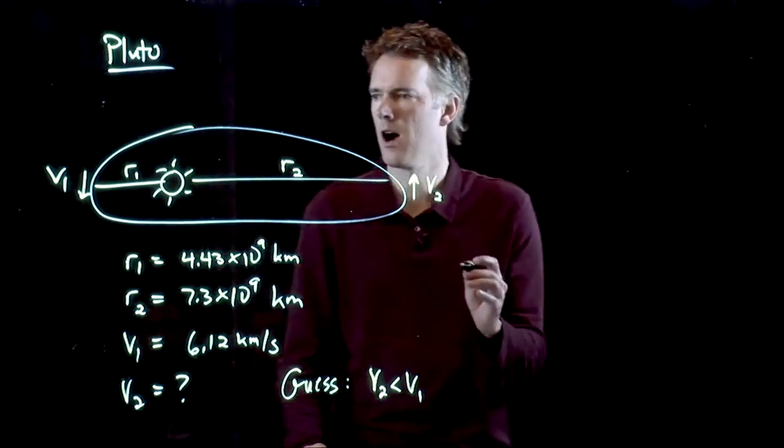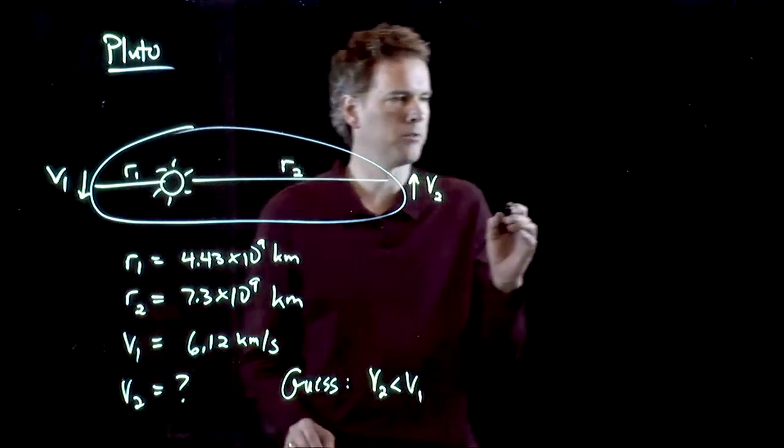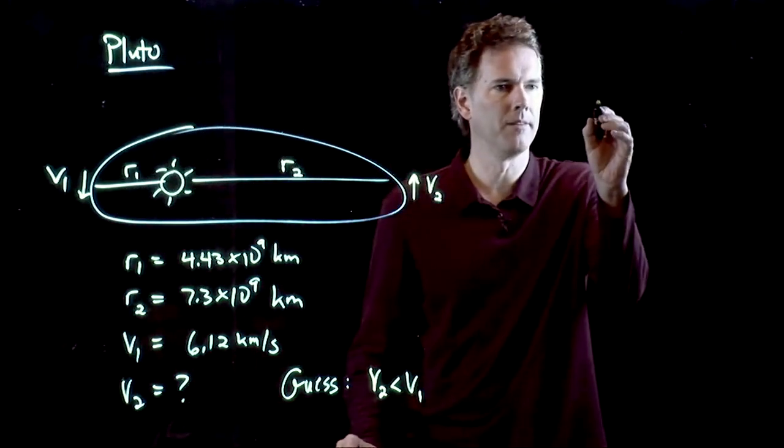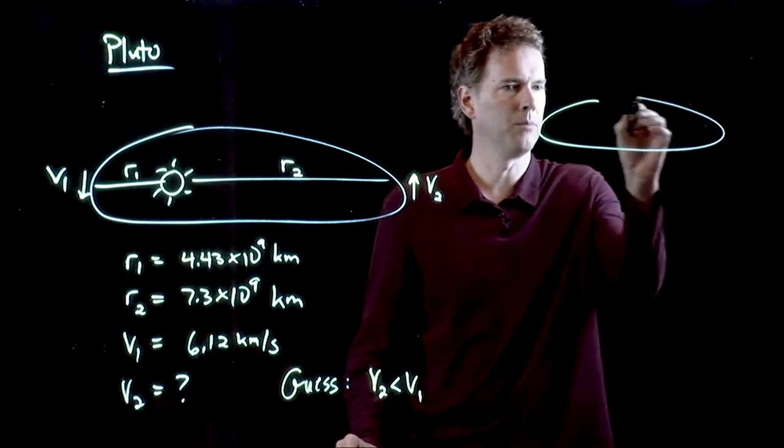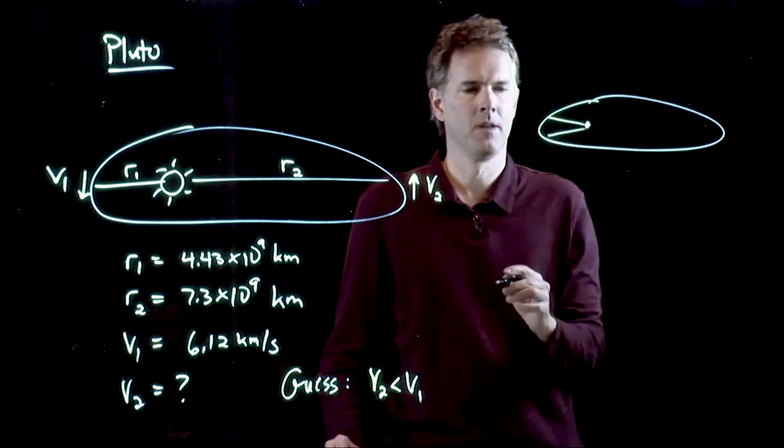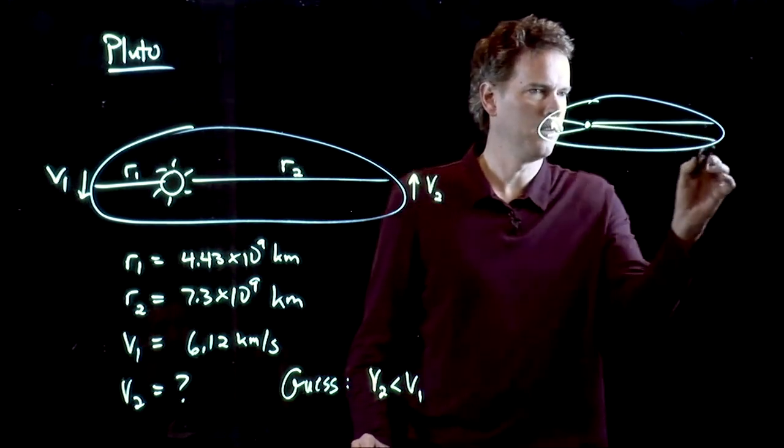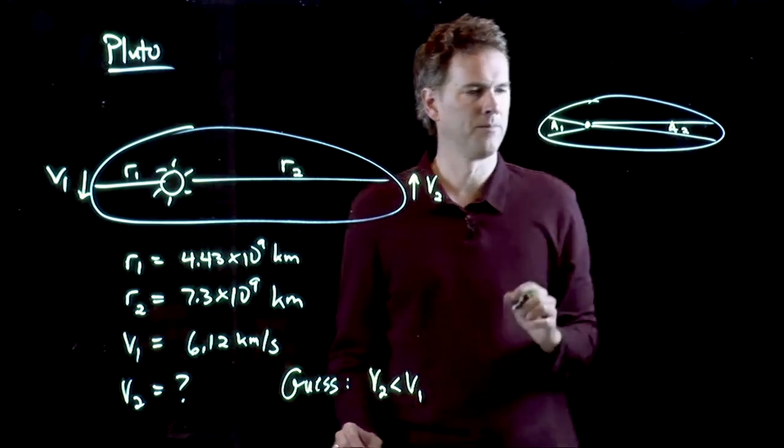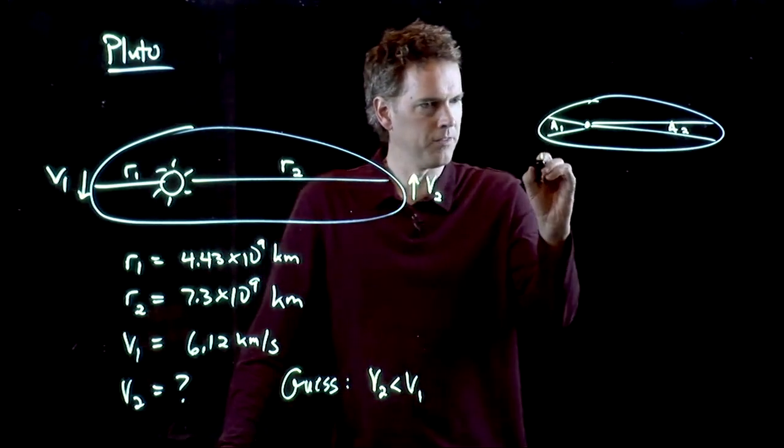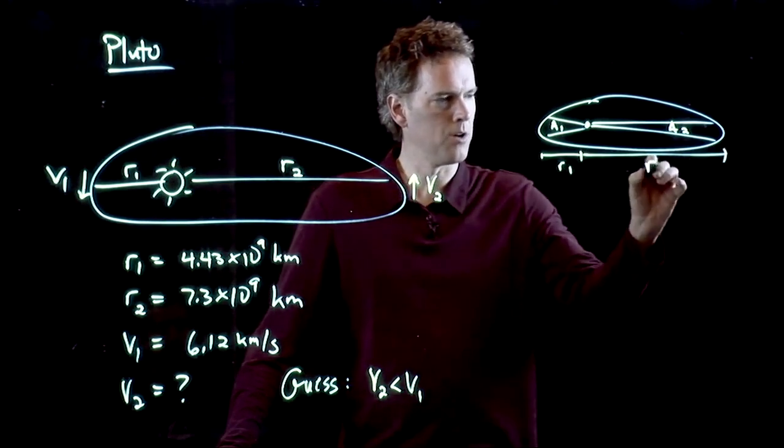So let's draw little areas here, and let's maybe just redraw our ellipse over here. Here's our ellipse. Here's the sun. We've got this area, which we're going to call A1. And we've got this area, let's call it A2. We know what this distance is, R1. We know what that distance is, R2.